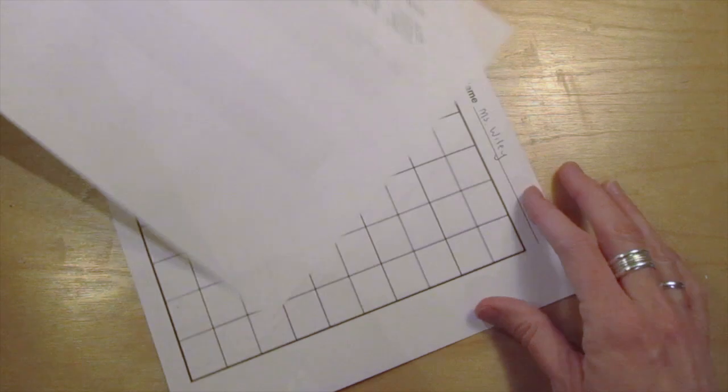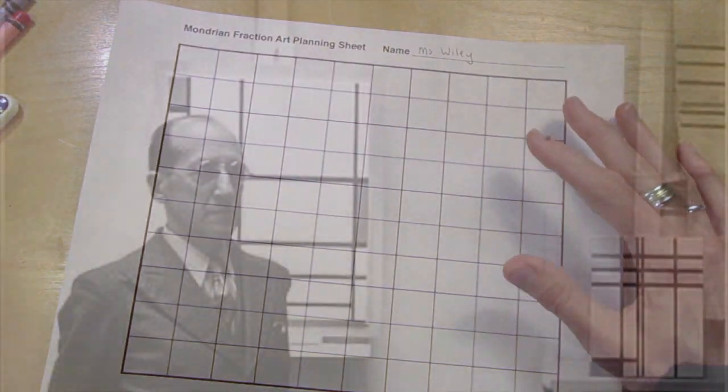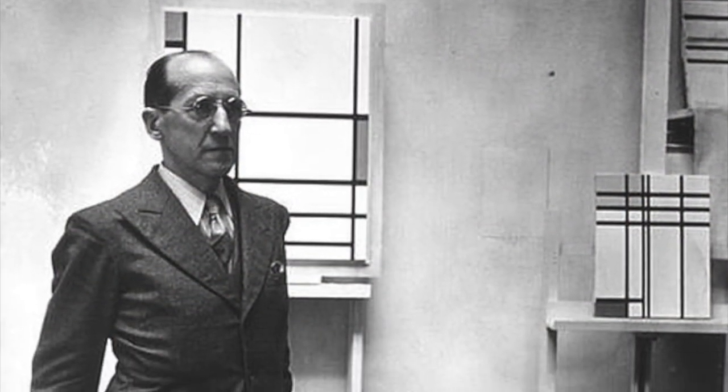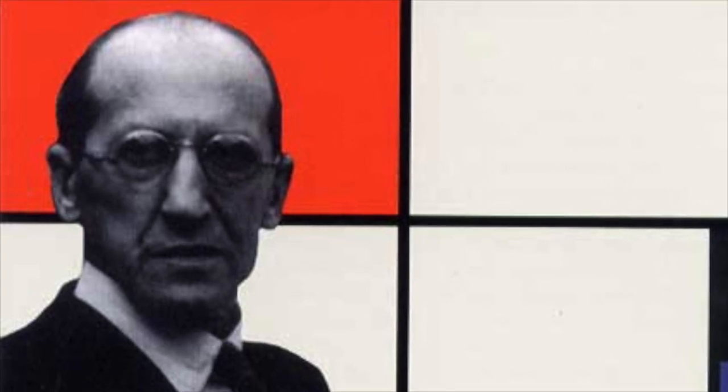You may be wondering why these are titled with the same name Mondrian. Piet Mondrian is a famous artist who lived from 1872 to 1944. He is known for being one of the pioneers of 20th century abstract art.